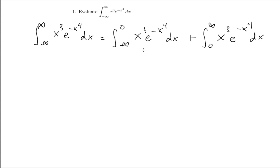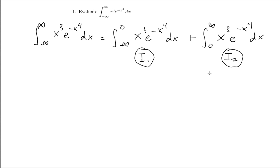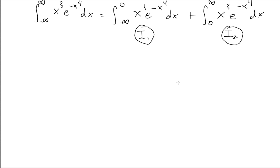We'll call these integral one and integral two. All we're going to do now is calculate each of these integrations separately as their own improper integrals, then at the end plug in the value for integral one and integral two, add them together, and we're done.